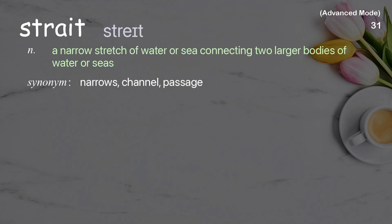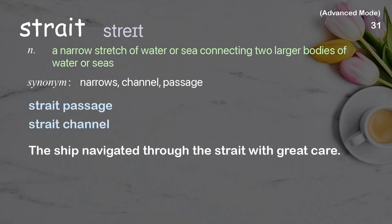Strait. A narrow stretch of water or sea connecting two larger bodies of water or seas. Examples: strait passage, strait channel. The ship navigated through the strait with great care.